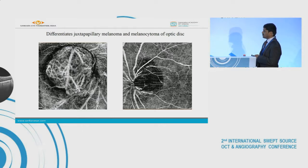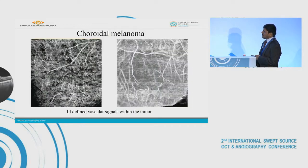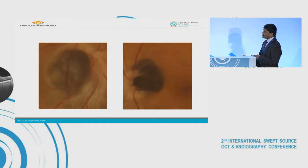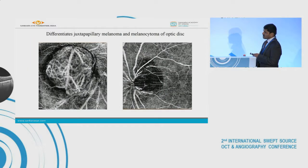The other is melanocytoma of the optic disc. Comparing to the other choroidal melanomas, the vascularity is quite well seen in this juxtapapillary case. This is probably because the juxtapapillary melanoma usually grows around the posterior edge of Bruch's membrane and comes into the superficial plane.